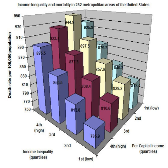Inequality does not only affect the health of human populations. David H. Abbott at the Wisconsin National Primate Research Center found that among many primate species, less egalitarian social structures correlated with higher levels of stress hormones among socially subordinate individuals. Research by Robert Sapolsky of Stanford University provides similar findings.